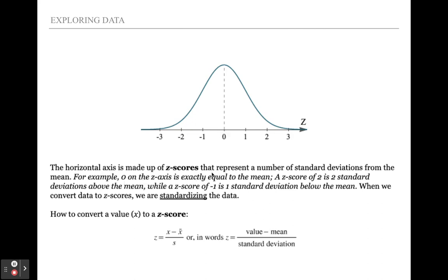Zero on the z-axis is exactly equal to the mean. The mean is right in the middle. The median is right in the middle. The mode is right in the middle. When you have perfect symmetry, the mean, median, and mode all line up right at zero. So if you had a z-score of zero, that means you're perfectly average.